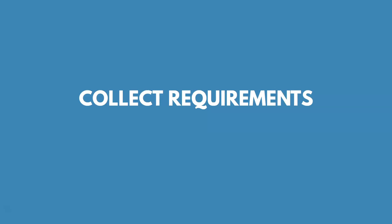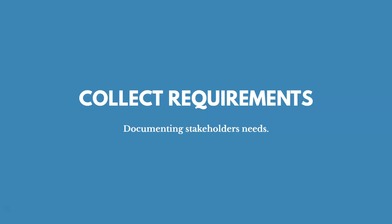After planning scope management, we start collecting requirements — documenting the needs of our stakeholders. The inputs include the project management plan, which contains the scope management plan and the requirements management plan, because those tell you how to collect requirements. You could also have project documents like a stakeholder register, which tells you who your stakeholders are — they're a source of requirements. Agreements can also be an input, giving perspective on what customers are expecting from the project, along with enterprise environmental factors and organizational process assets.